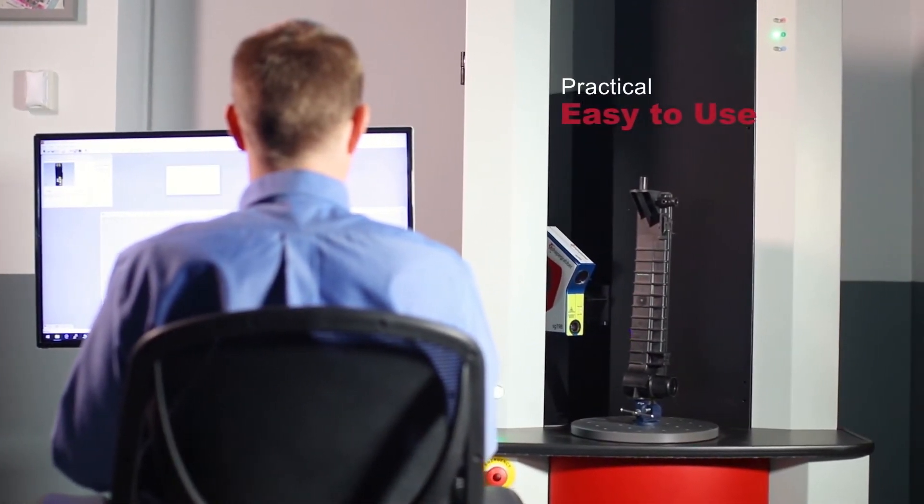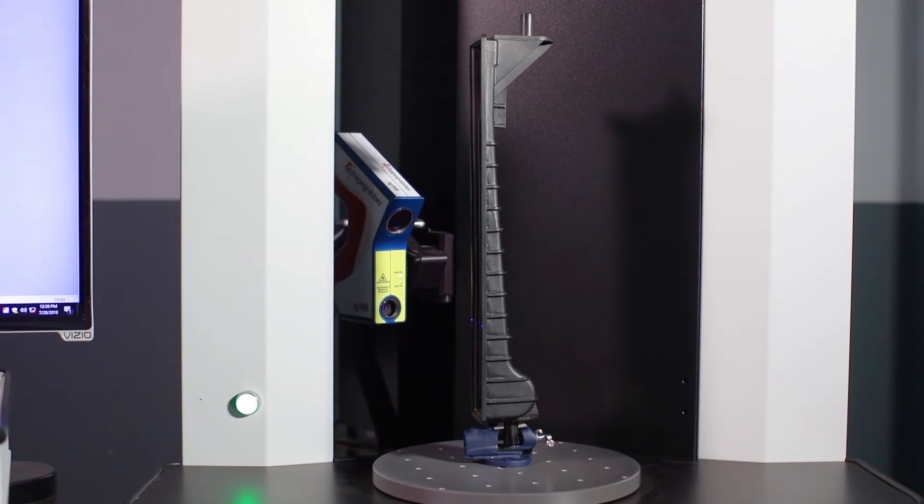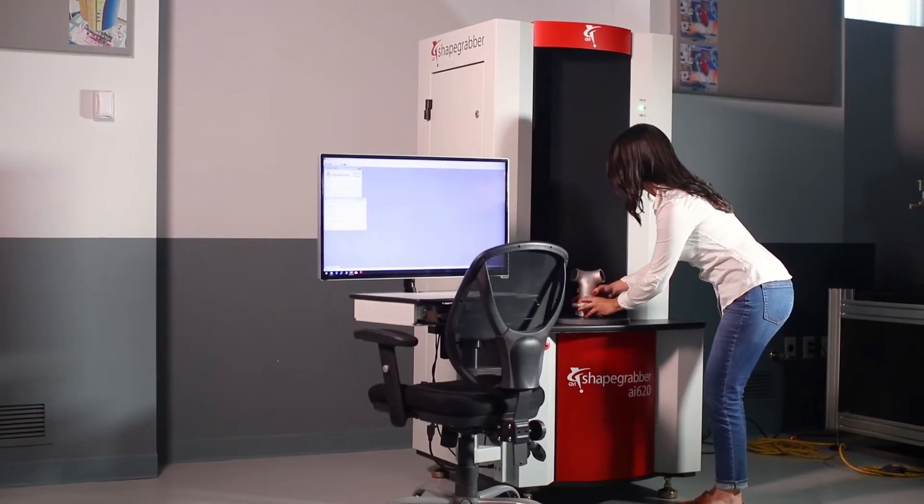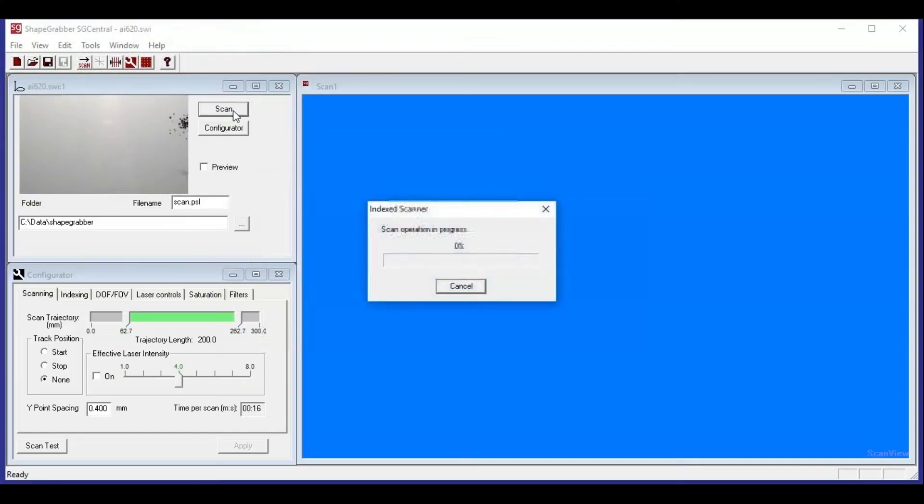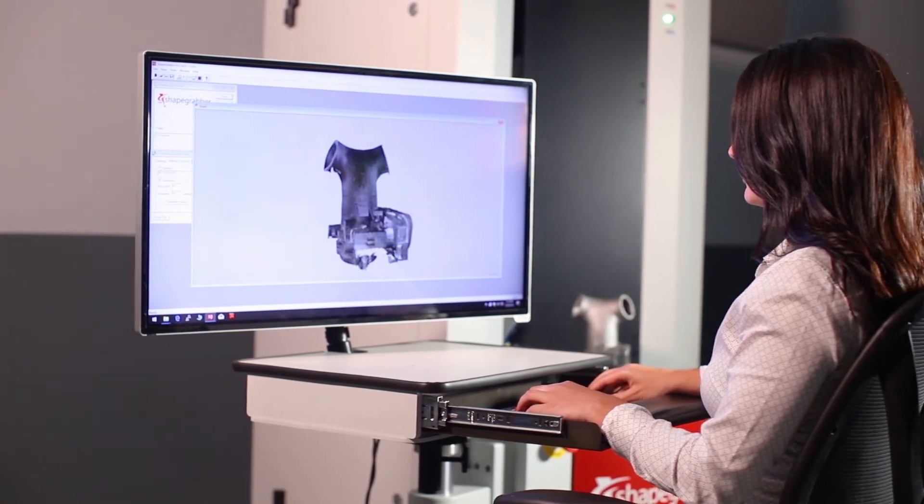ShapeGrabber AI620 is automated and simple to use. The OpenWork Envelope provides useful visual feedback and makes part loading and unloading fast and easy. Scans can be initiated with one click, delivering consistent measurement results by any operator.